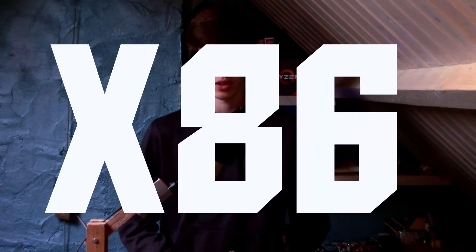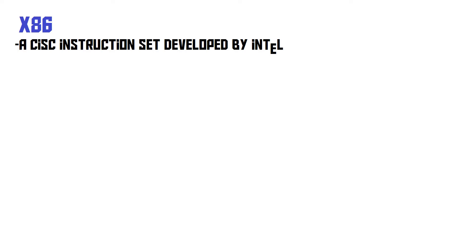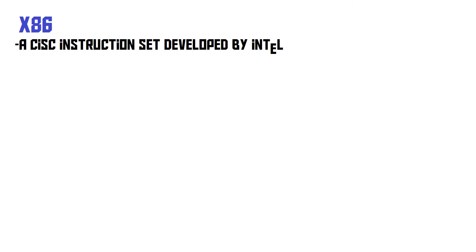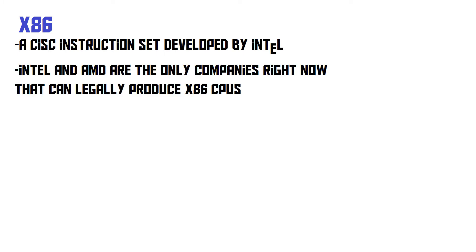Let's take a look at some instruction sets you might be familiar with. First, there is X86, a CISC instruction set made by Intel. They've been using that instruction set on all of their CPUs for a very long time, so the shiny new Core i7-8700K speaks the same language as the old Pentium 4 I have right here. Intel really doesn't want any other company to make X86 CPUs, and they've been quite good at preventing this — they are now the only company legally allowed to make X86 CPUs, along with AMD. If you want to know the history of why AMD got a license to make X86 CPUs, go find it — it's rather interesting.